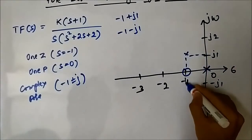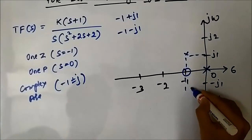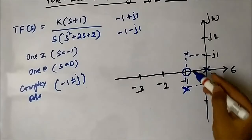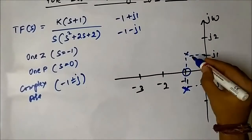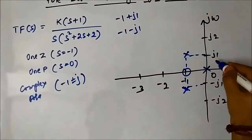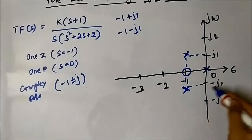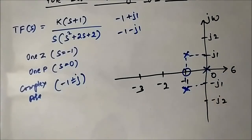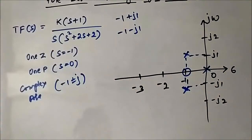This is the pole-zero plot for a transfer function with complex poles, along with the real poles and zeros.